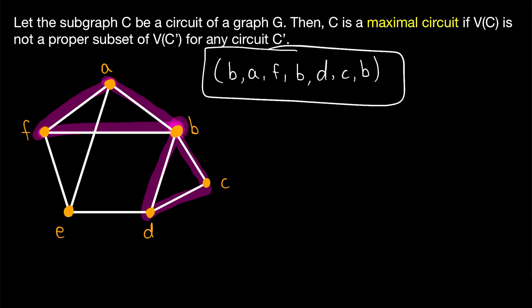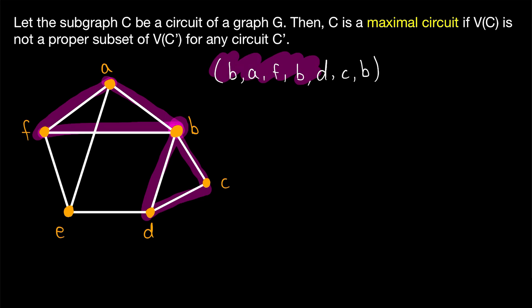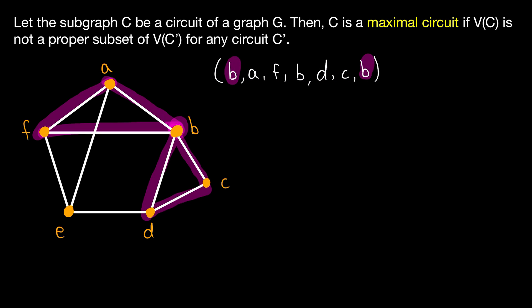When we say a circuit is a sequence of adjacent vertices, we mean that consecutive vertices in this sequence are adjacent — so B and A are adjacent, A and F are adjacent, F and B are adjacent, and so on. This just means that in a circuit we're only allowed to go from one vertex to another if there is an edge joining them. This sequence is a circuit because it starts and ends at the same vertex and doesn't repeat any edges. You may notice that B is repeated in the middle, but that's okay — a circuit can repeat any of its vertices, not just the starting and ending vertex.